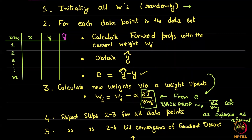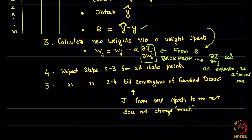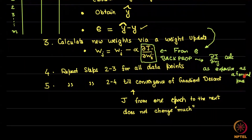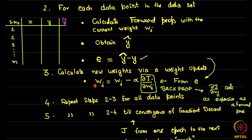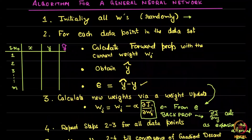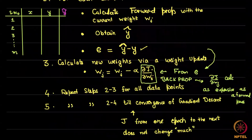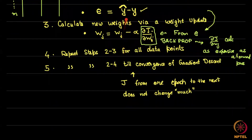Once you have calculated this error — the gap between ground truth and prediction — using this error you are somehow supposed to calculate del j / del wj. This step of calculating del j / del wj is what is called backprop. Our expectation is that if done right, calculating del j / del wj is only as expensive as a forward pass. Then you repeat: for the new wj, do forward prop again. This is a stochastic gradient descent (SGD) algorithm, and we keep repeating all these steps until convergence of gradient descent.